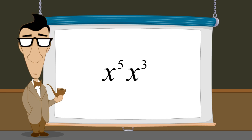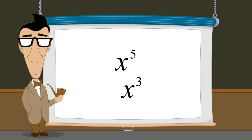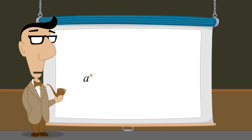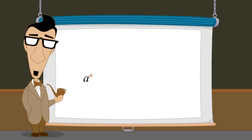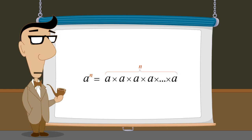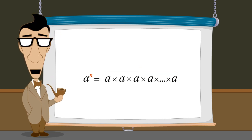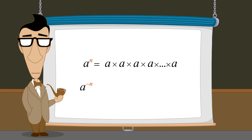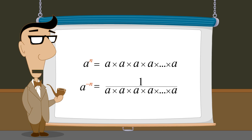In this lecture, we will see how to simplify exponential expressions with divided terms. We have seen that any number a raised to the nth power, where n is a positive integer, is equivalent to n a's multiplied together. Likewise, a to the nth power, where n is a negative integer, is equivalent to one over n a's multiplied together.